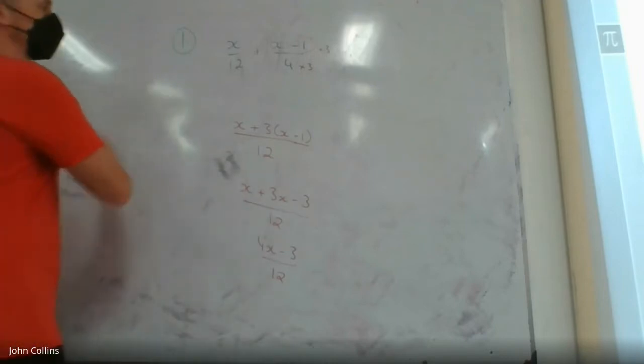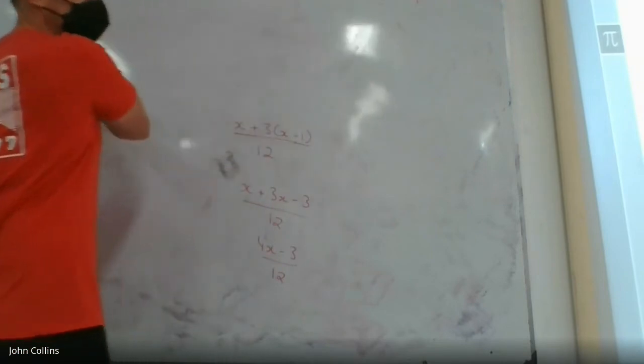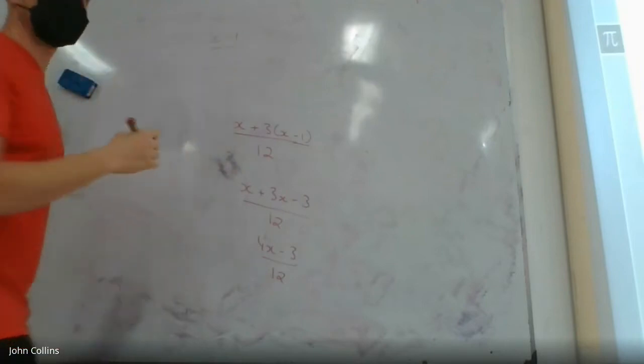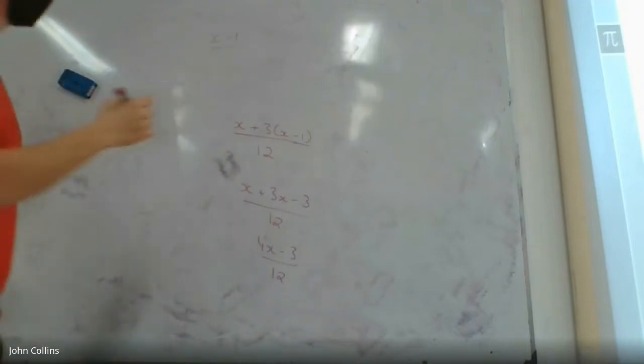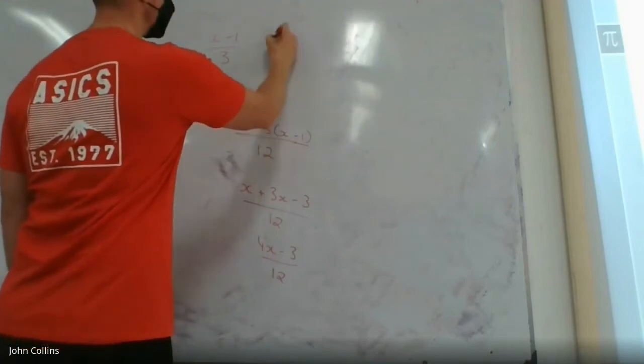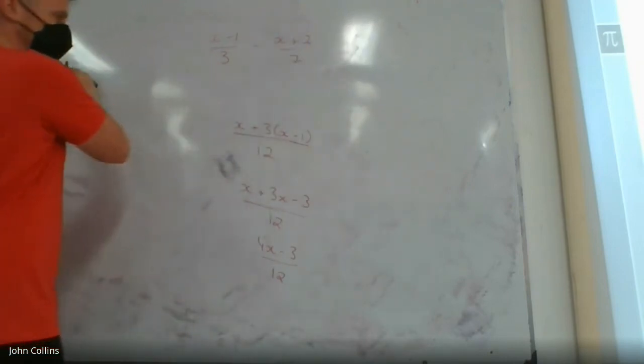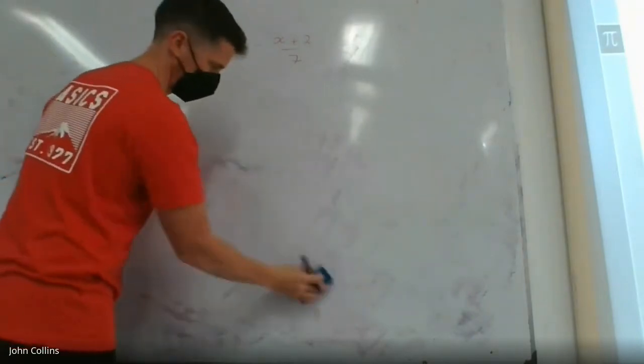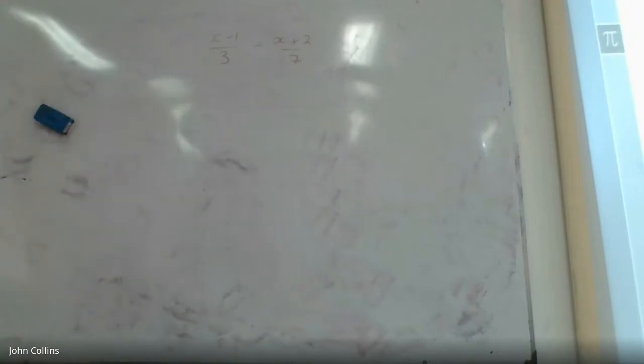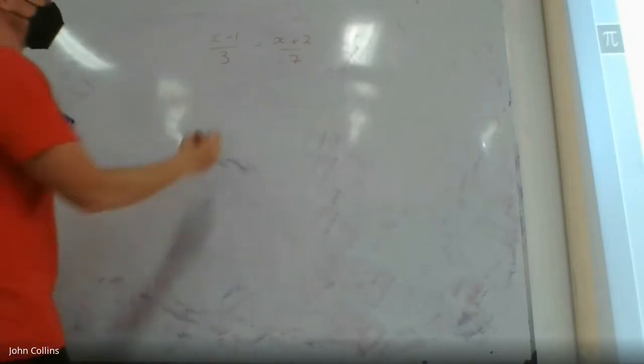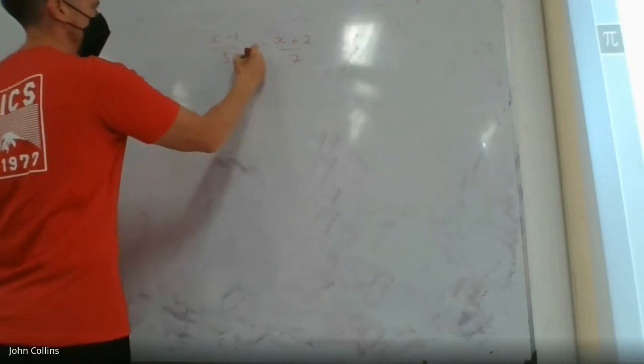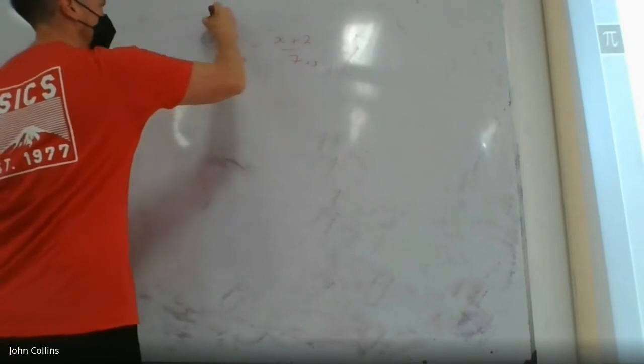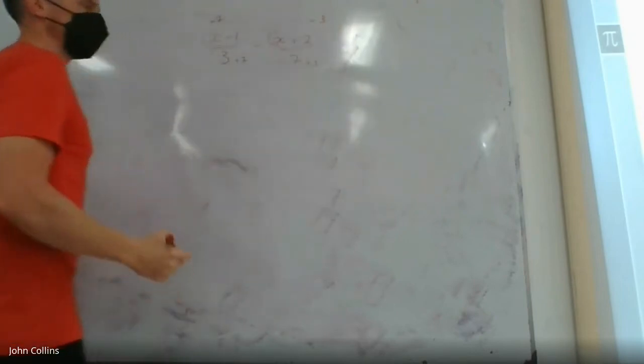Second one. Has anyone finished the second one? Yes. That's x minus 1 over 3 minus x plus 2 over 7. Let's get rid of this one. Common denominator of 21. This has to be multiplied by 7, that has to be multiplied by 3. This multiplied by 7, and this multiplied by 3.